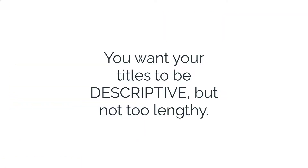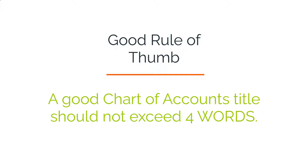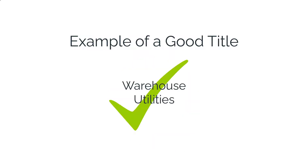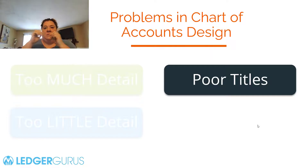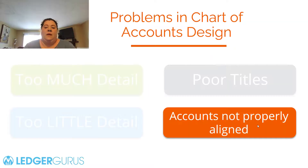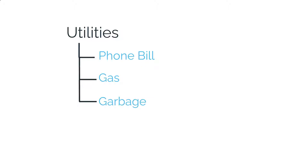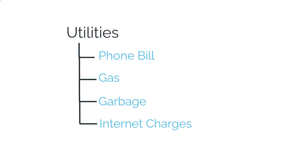Another problem is poor titles. You want your titles to be descriptive but not too lengthy. A good rule of thumb is that a good chart of accounts name should never exceed more than about four words — say 'warehouse utilities,' not 'utilities in the warehouse.' When you open your financials, you want it to be clean, concise, and clear. Also watch out for accounts not properly aligned: QuickBooks allows sub-accounts under parent accounts, but if used poorly it creates a mess. For example, if you have a parent account called 'utilities' with sub-accounts for phone and gas, but 'internet charges' is floating somewhere else never made a sub-account of utilities, you need to align that correctly.